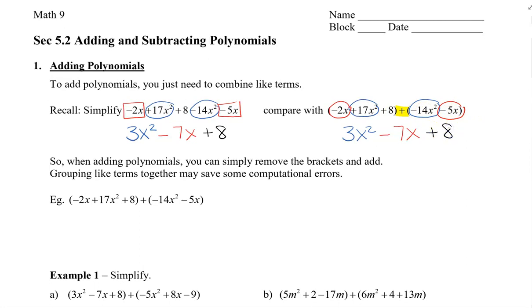So we can see that when adding polynomials, you can simply remove the brackets and then add. Now I recommend that maybe you might want to group the like terms together first to save some computational errors.